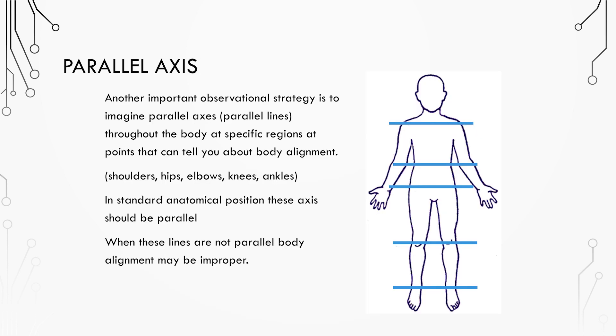Another important observational strategy is to use parallel axes to view movements in the frontal, sagittal, and transverse planes. We can do this by drawing parallel lines at different points throughout the body. For example, the shoulders, waist, hips, hands, knees, and ankles.